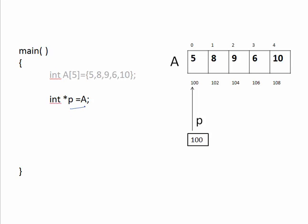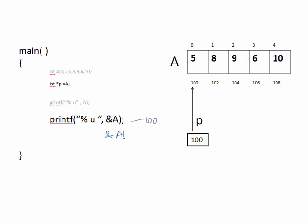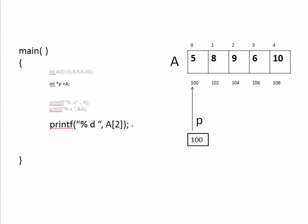I have taken one pointer P pointing to the base address of the array. First we will see the syntax by using the base address of an array — that same syntax is useful for pointers. If I say printf(a), 'a' is the base address: 100. If I say ampersand a, it is also 100 — the address of a is also 100. And even if I say ampersand a[0], it is also going to be 100.